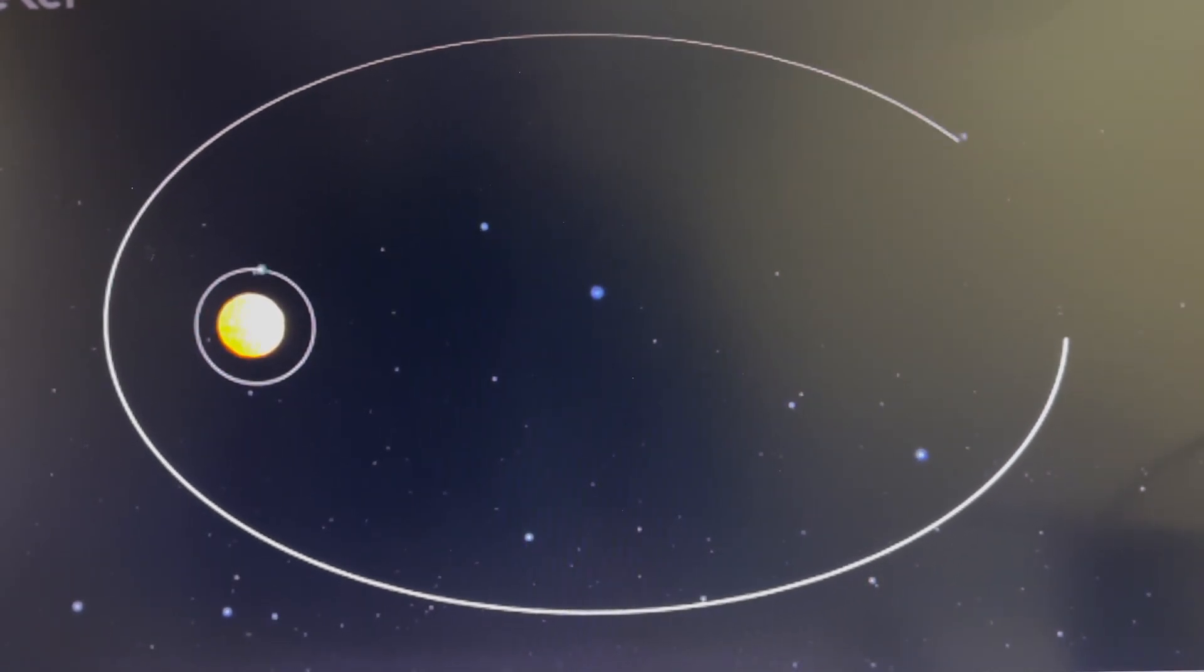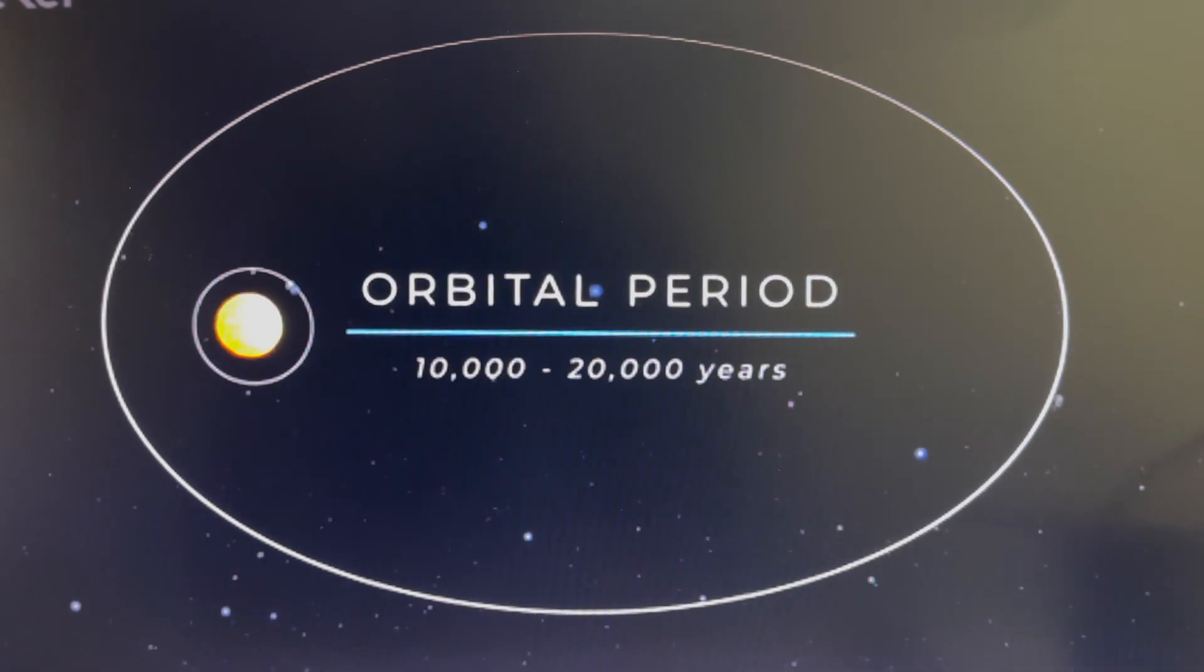NASA says at that distance, it may take between 10,000 and 20,000 Earth years to make one full orbit around the Sun.